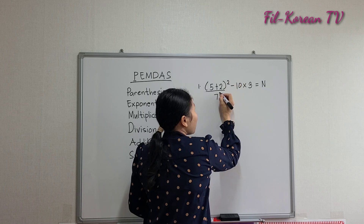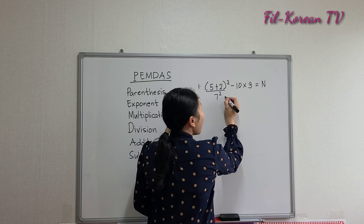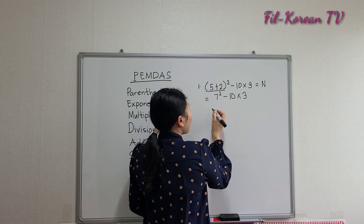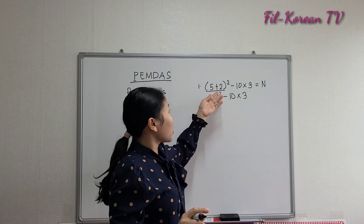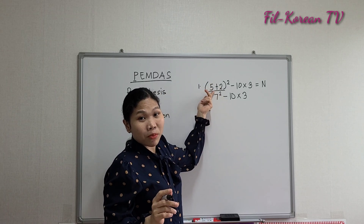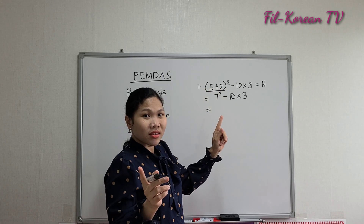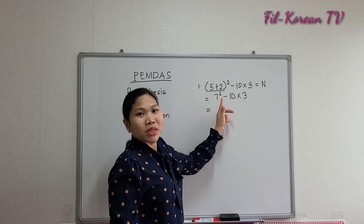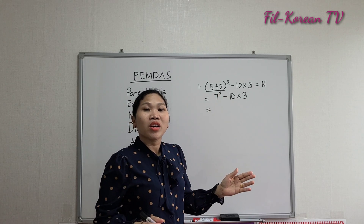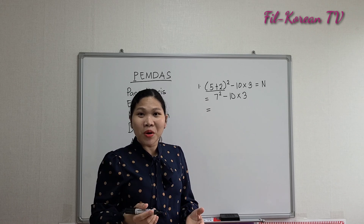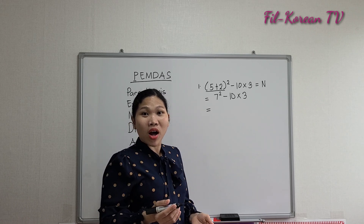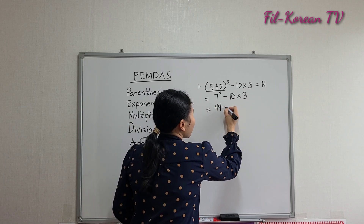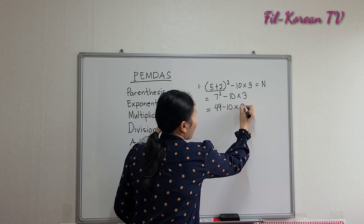Exponent — we now have 7 to the second power minus 10 times 3. We do the parenthesis first, then second, the exponent. 7 to the second power means 7 times 7. 7 times 7 equals 49, minus 10 times 3.